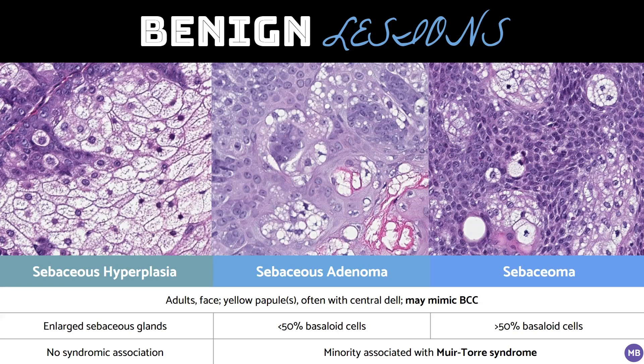Going back to the differential, there are three benign sebaceous lesions to consider: sebaceous hyperplasia, sebaceous adenoma, and sebacioma. All three often present as a solitary yellow papule on the face of an adult and may clinically mimic basal cell carcinoma. They may also have a central depression or dell, which histologically corresponds to a direct connection of the tumor to the skin surface. The main distinction between these lesions is the amount of basaloid cells. Sebaceous hyperplasia looks like oversized sebaceous glands with a normal amount of basaloid cells. Sebaceous adenoma has a greater than normal percentage of basaloid cells, but they comprise less than 50% of the tumor. Sebacioma is similar to sebaceous adenoma but is composed of more than 50% basaloid cells.